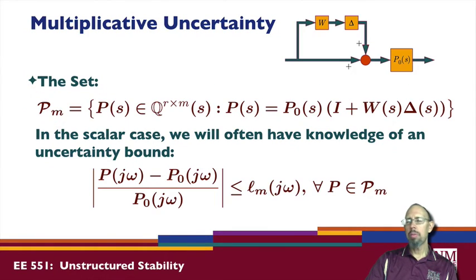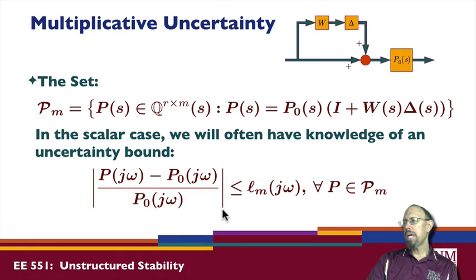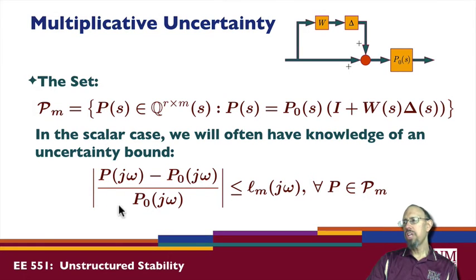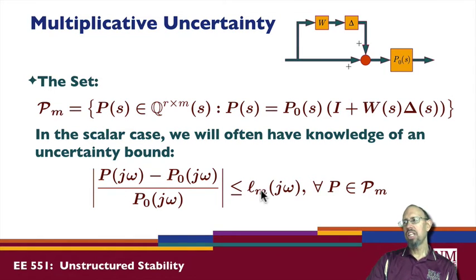For the multiplicative uncertainty case, P overall is given by the product of the nominal plant times the quantity one plus W-delta. We can then look for an uncertainty bound given by the ratio of the difference between P and P-zero divided by P-zero — that's a known quantity. This ratio is essentially a percent difference, and if P-zero is known we can recast it and find an upper bound for this quantity.